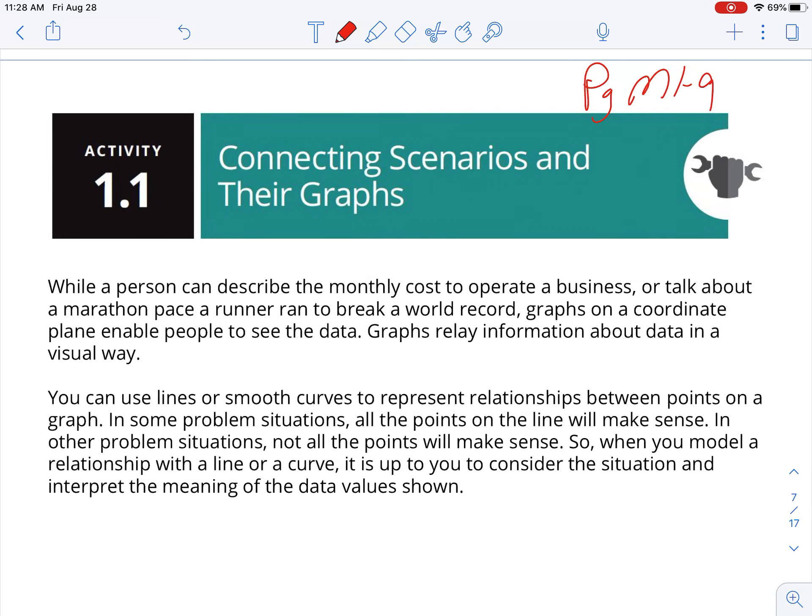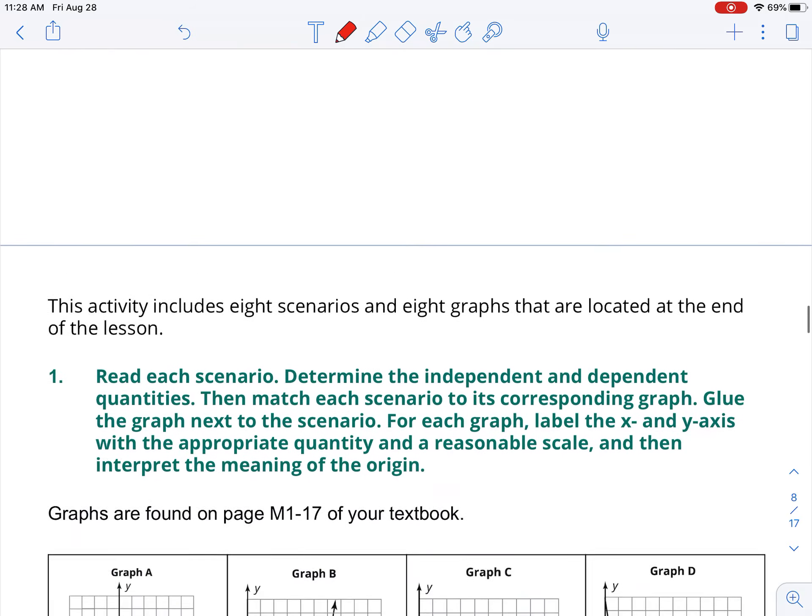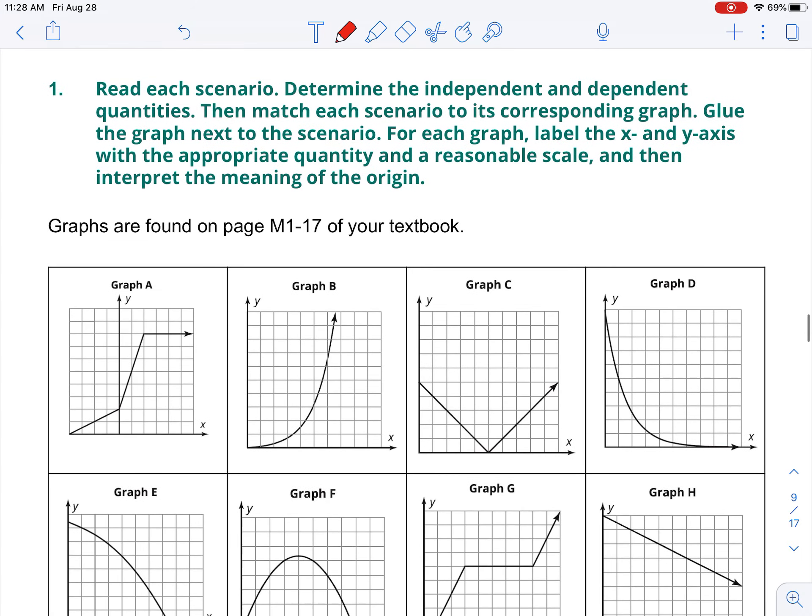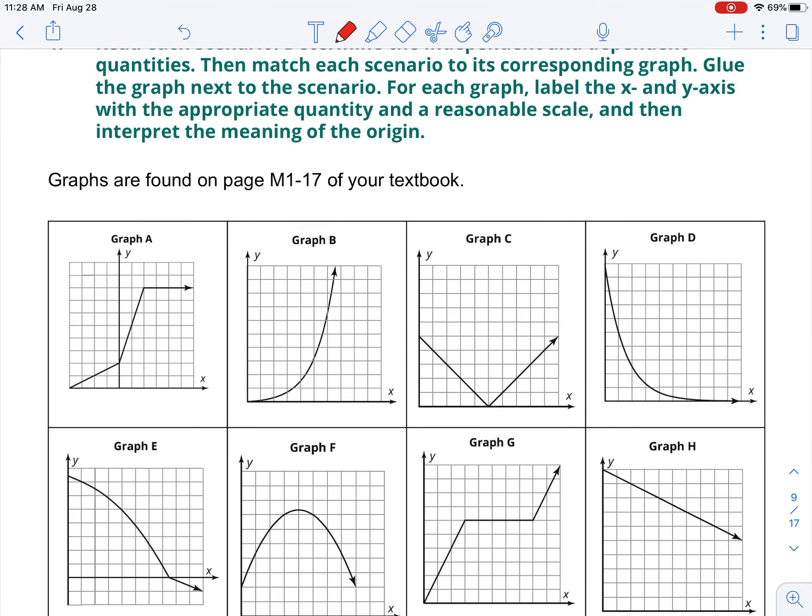And before we do M1-9, down there at the bottom, we'll restart with example 1. You should have these graphs cut out. Now you don't see those graphs on that page, so please turn to page M1-17. You will see on M1-17 these eight graphs. You need to get some scissors, cut them out, lay them on your table, then have some tape or glue off the side so that we can then use these to paste into our notes for today.